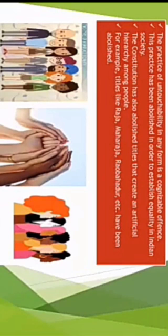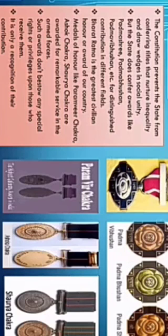The practice of untouchability in any form is a punishable offence. It means that if any Indian citizen is found responsible for or still following the practice of untouchability, they will be severely punished by the government. The practice of untouchability has been abolished so that there is equality among all people living in Indian society. Under the Right to Equality, the constitution has also abolished certain titles that create an artificial hierarchy among people. Some people add titles like Raja, Maharaja, Raj Bahadur, etc. to their names to appear superior — these have been abolished by the constitution.